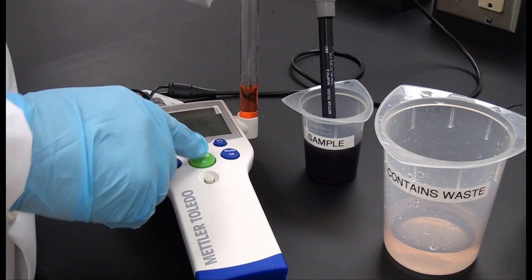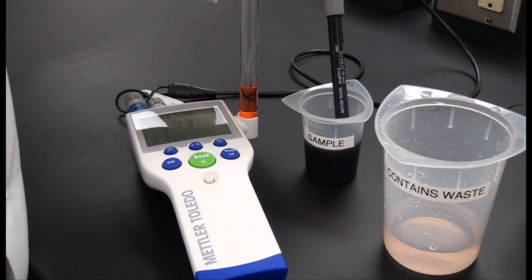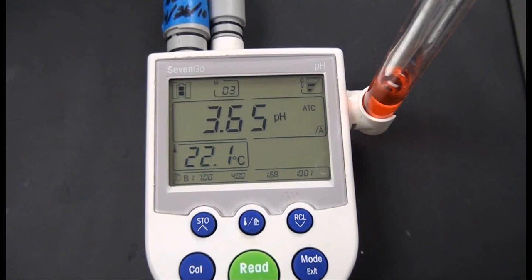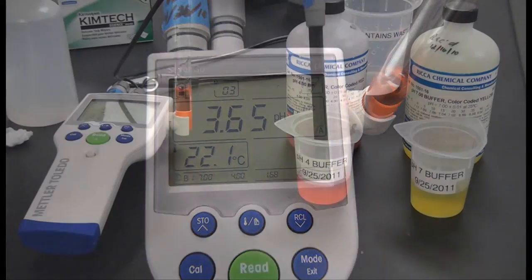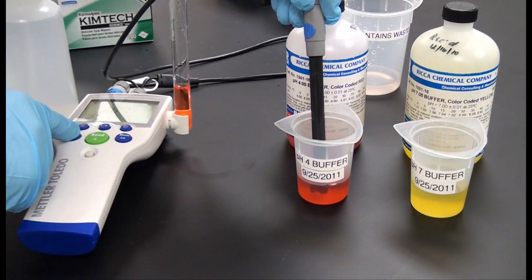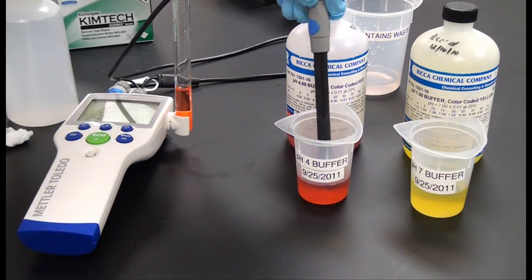The pH meter is used to measure the acidity or alkalinity of a liquid through a probe by reading the reactivity of the hydrogen ions. The 7-go SG2 pH meter allows you to perform 1, 2, and 3-point calibrations.